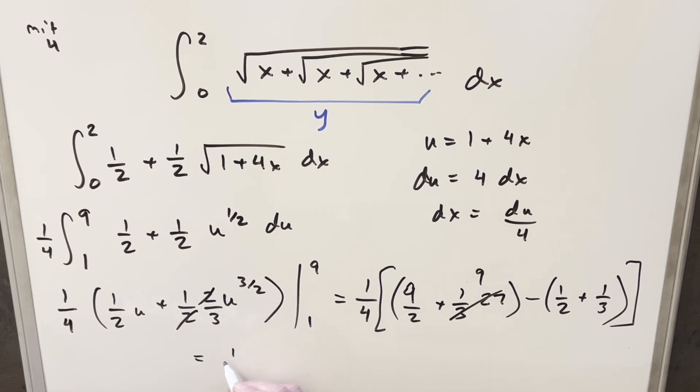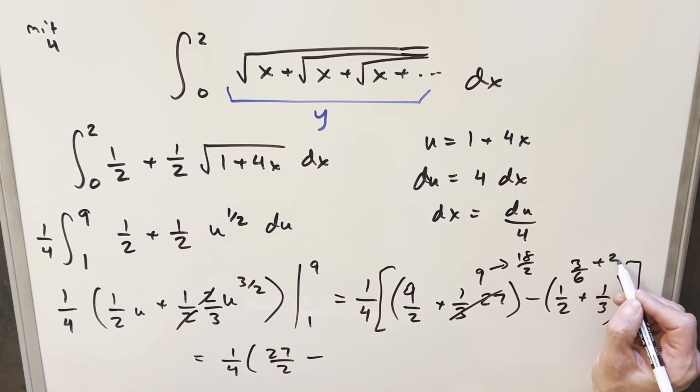We have 1 fourth up front. I'll write 9 as 18 halves. Adding 18 halves and 9 halves gives 27 halves. Combining the other terms, I can write this as 3 sixths plus 2 sixths, which becomes minus 5 over 6.